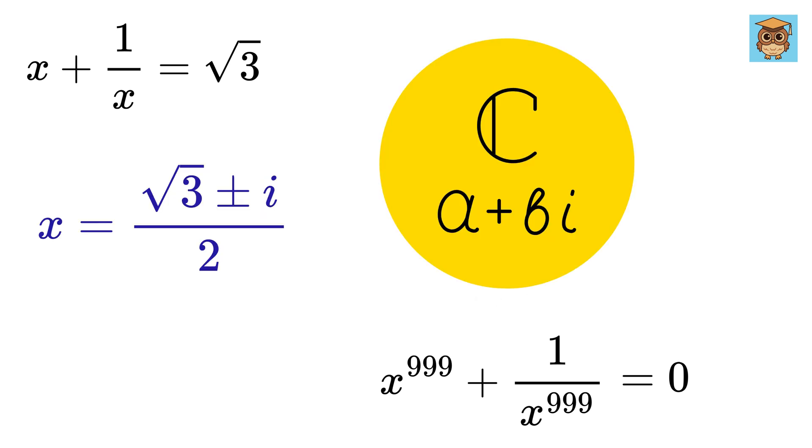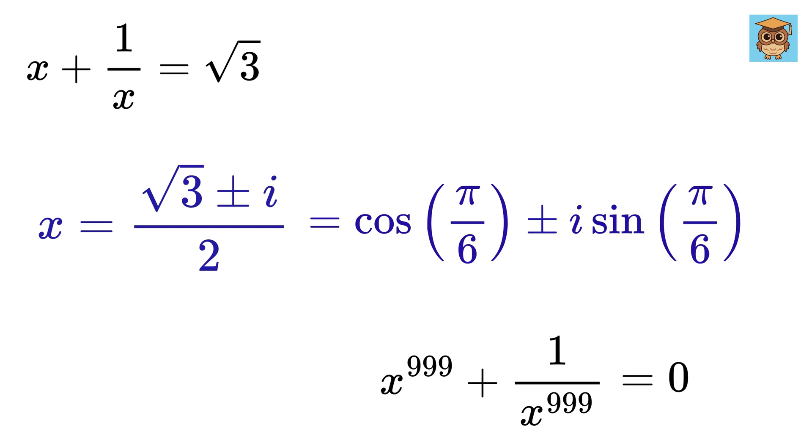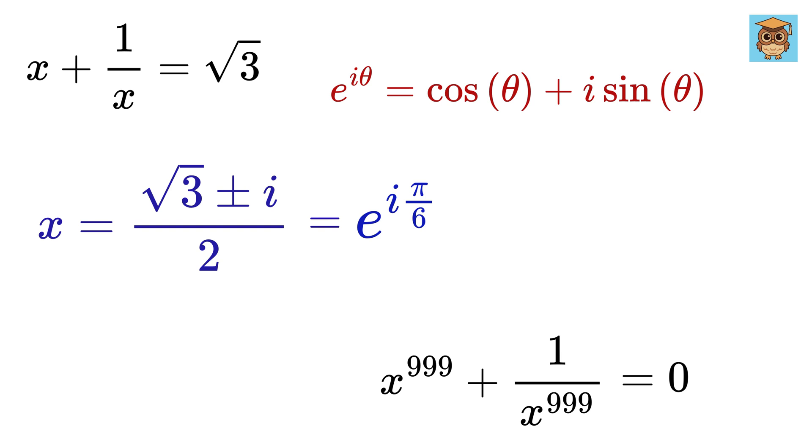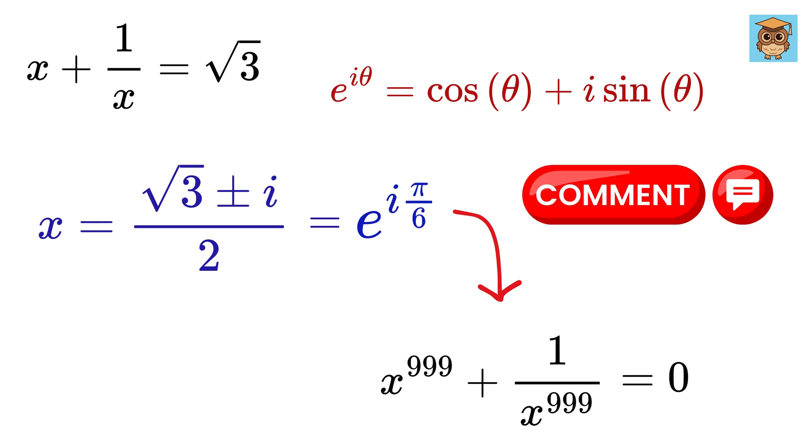Now, if you have some idea about complex numbers, then we can write this x as cosine and sine form. And using Euler's formula, we can convert it like this. Now, can you solve further using only this piece of information? Let me know in the comments if you can solve it this way, and I will give you a big heart.